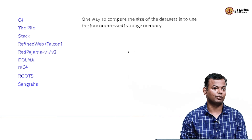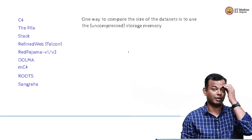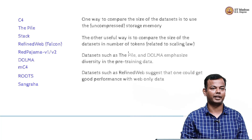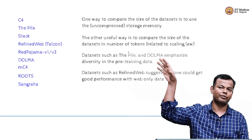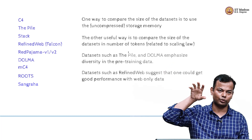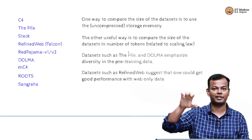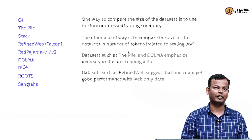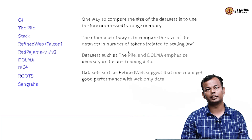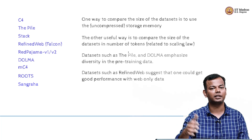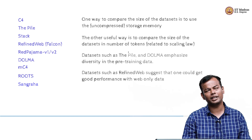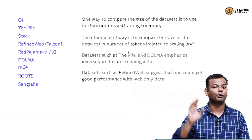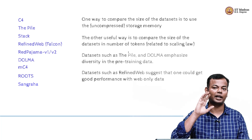One way to compare datasets is to look at the raw size, the uncompressed memory size, but that does not make so much sense. The better way is to look at the number of tokens, which is the more standard way of comparing datasets because it fits in with the scaling laws — you are aiming for a certain model size and a data size of a certain number of tokens. These datasets also differ in philosophy: some focus on diversity, but works like RefinedWeb said that you can get good performance just by using a large amount of clean web data.